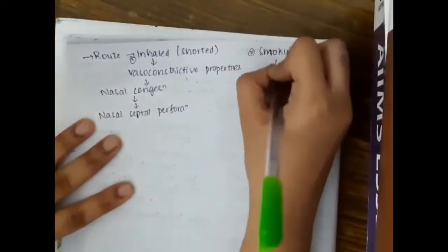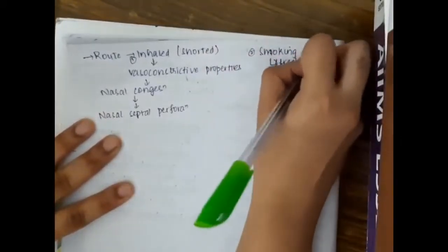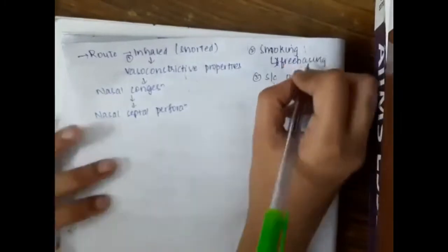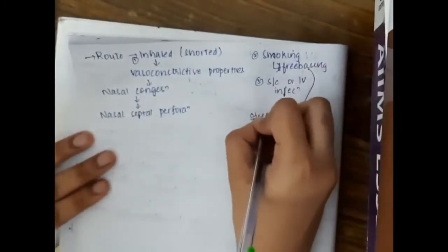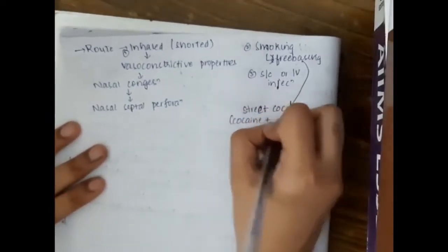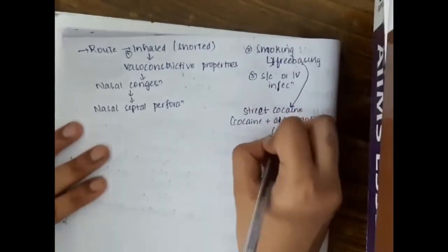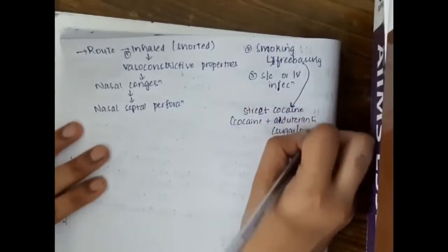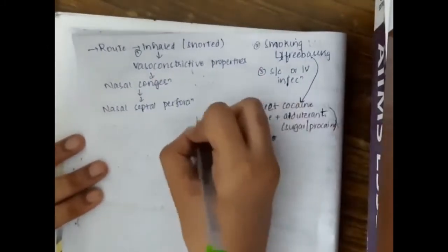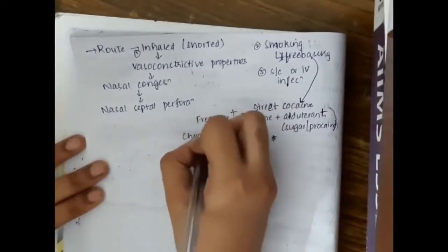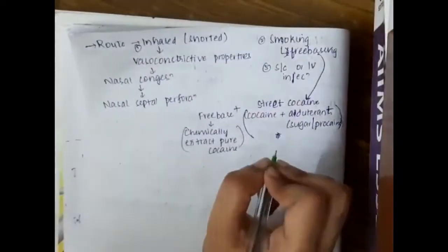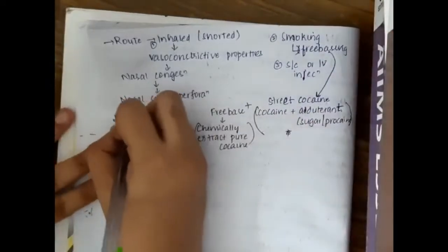Cocaine is also smoked. If it is smoking, it is done by free basing and it can also be taken by subcutaneous or IV route. If it is smoked, this cocaine should always be combined with an adulterant like sugar or propane and it forms street cocaine. To this street cocaine, we can add free base, which is chemical extract of pure cocaine.